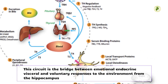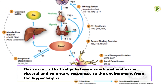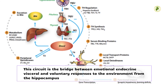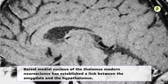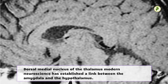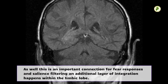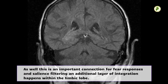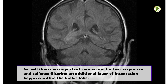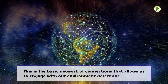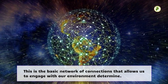Let's trace the Papez circuit. This circuit is the bridge between emotional, endocrine, visceral, and voluntary responses to the environment, originating from the hippocampus. The dorsal medial nucleus of the thalamus is a key node. Modern neuroscience has also established a link between the amygdala and the hypothalamus — an important connection for fear responses and salience filtering. An additional layer of integration happens within the limbic lobe, forming the basic network of connections that allows us to engage with our environment.